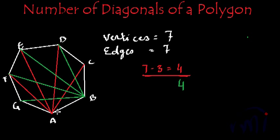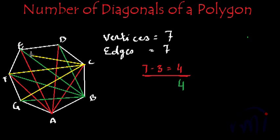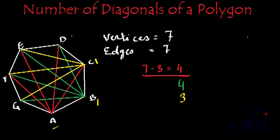And now if I take point C and try to draw diagonals — from C to B I cannot draw, and from C to A is already drawn in red color, so I won't draw again. And then I can draw from point C to point G, then from point C to point F, and then from point C to point E. So I have drawn 3 diagonals in yellow. So I have covered point A, point B, and point C, and now let me see how many diagonals I can draw from point D.